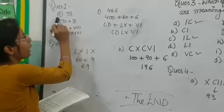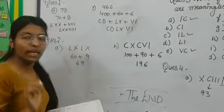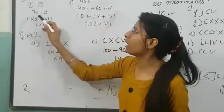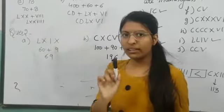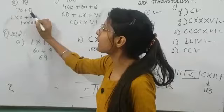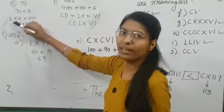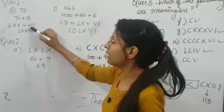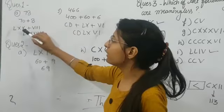Question number 1 is 78. 78 is 70 plus 8. 70 in Roman numerals - how do you mention it? Eight. Here and then add. 78.